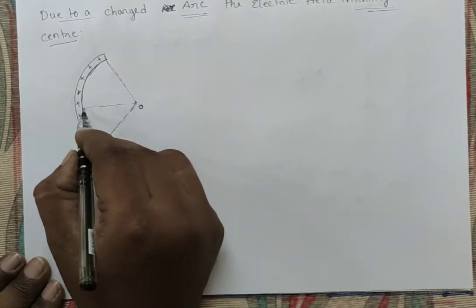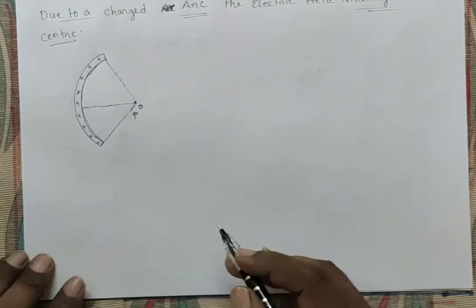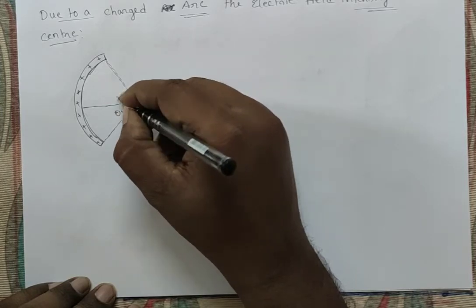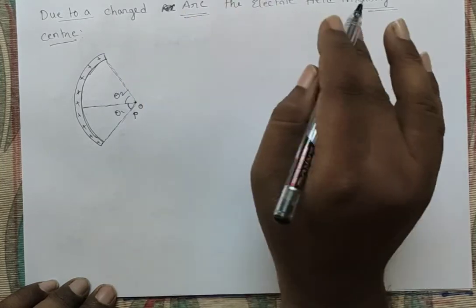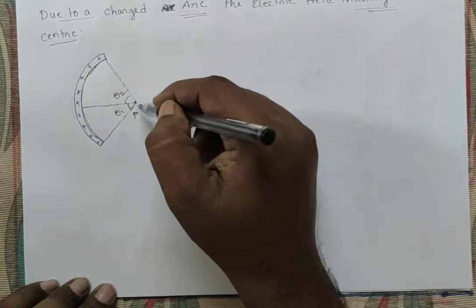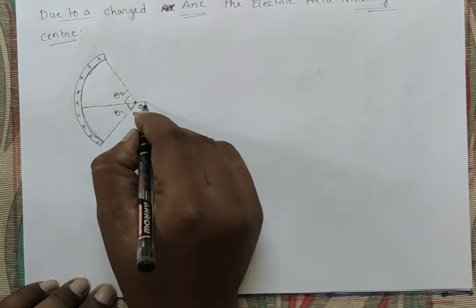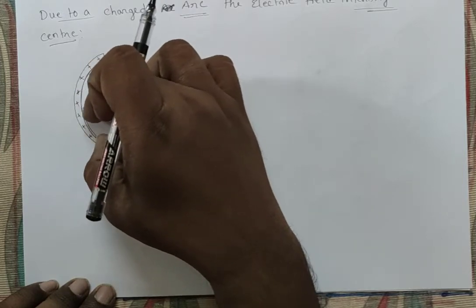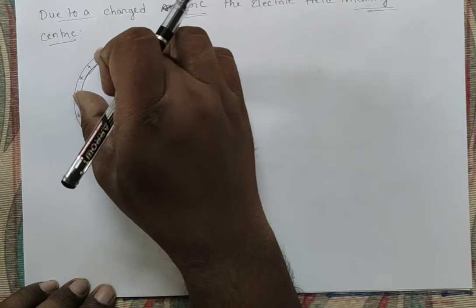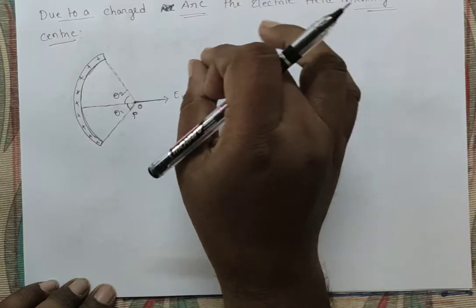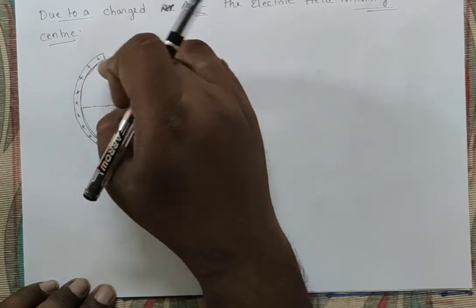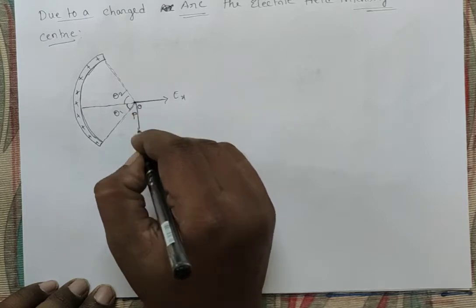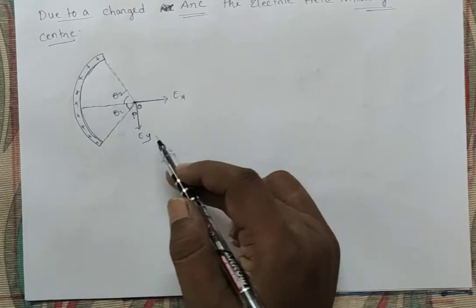If you are observing from a point P that is not exactly at the center of the arc, the angles are different: this angle is theta1 and this angle is theta2. Similar to the previous case, the electric field intensity has components along the x-axis (Ex) and along the y-axis (Ey). If theta1 and theta2 are equal, the upper and lower parts cancel, but if one part is larger, the resultant electric field intensity Ey is directed downwards.